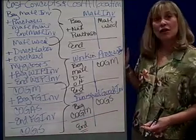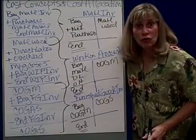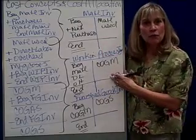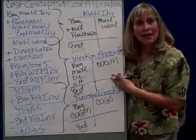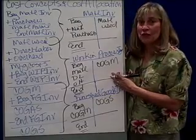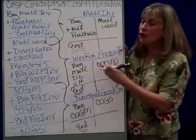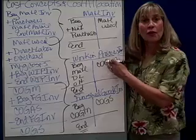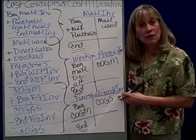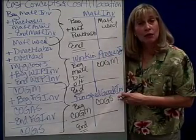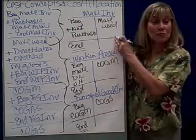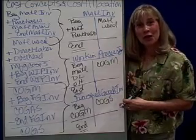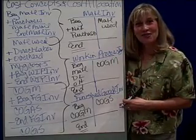If anyone ever asks you where financial statements come from, they come from the accounts. Specifically, cost of goods manufactured and sold come from the three accounts that are inventory accounts and assets: material inventory, work in process inventory, and finished goods inventory.